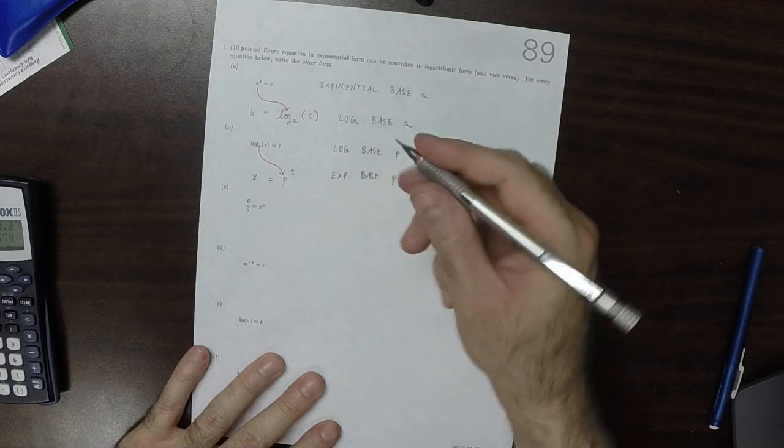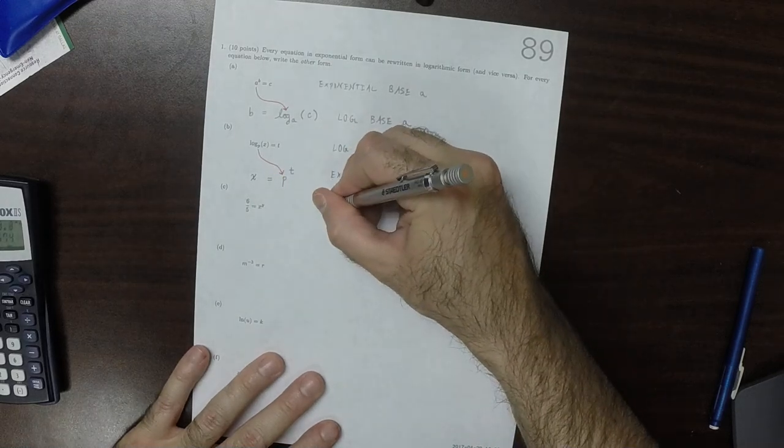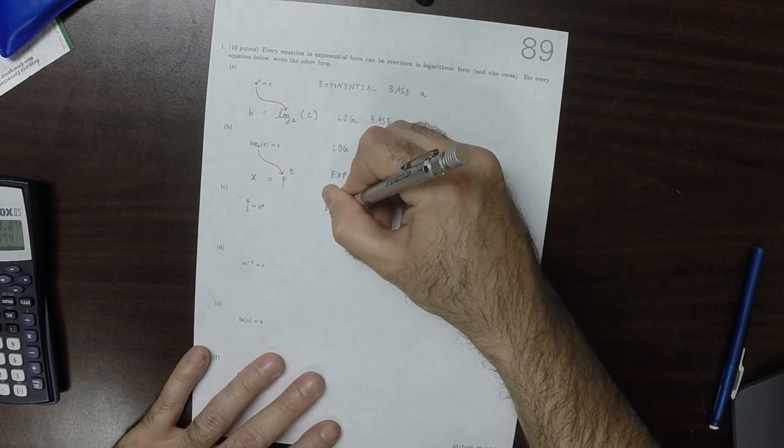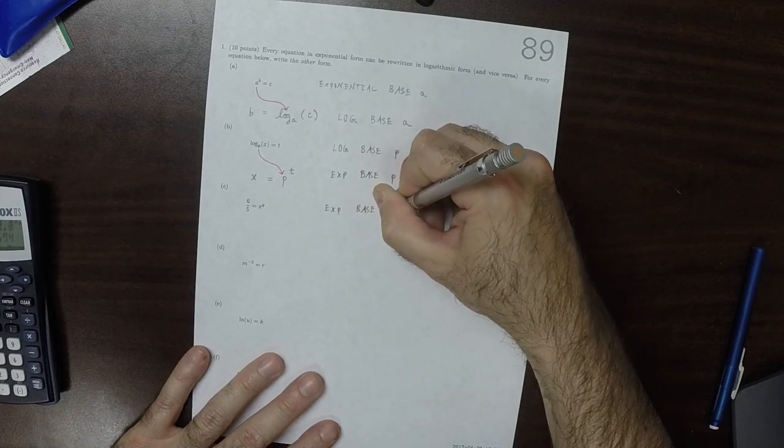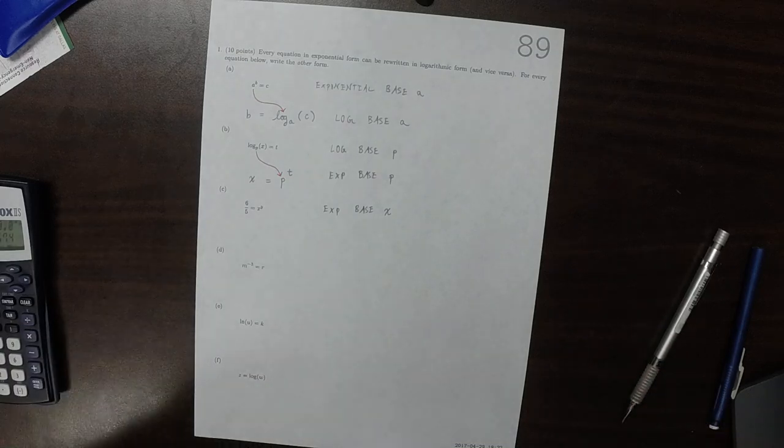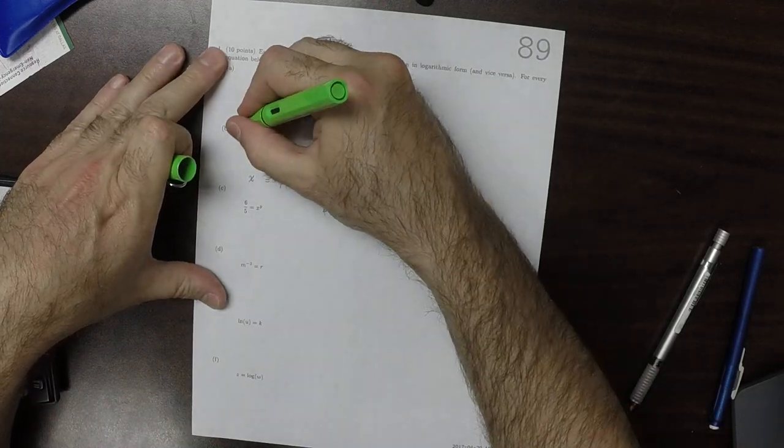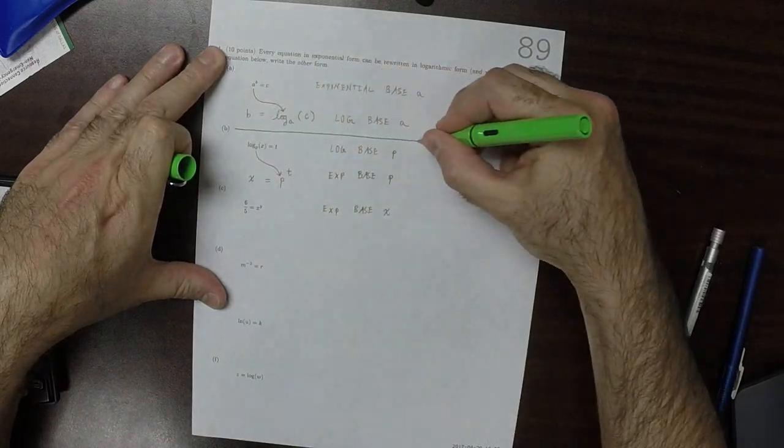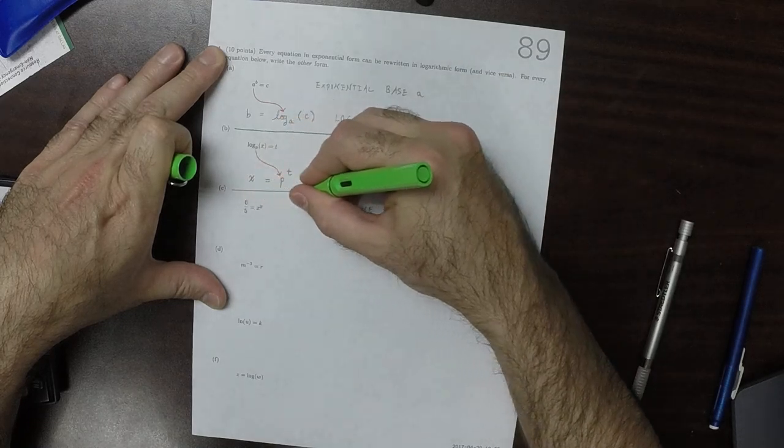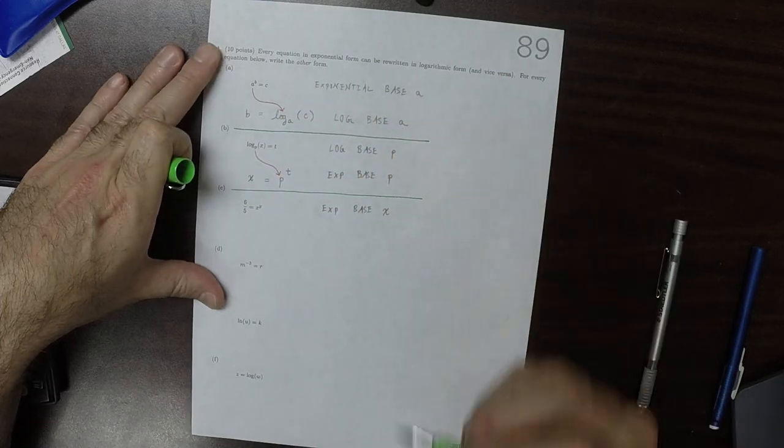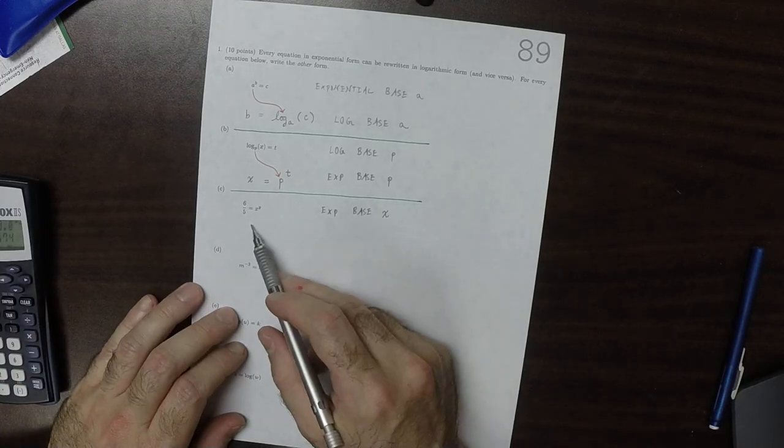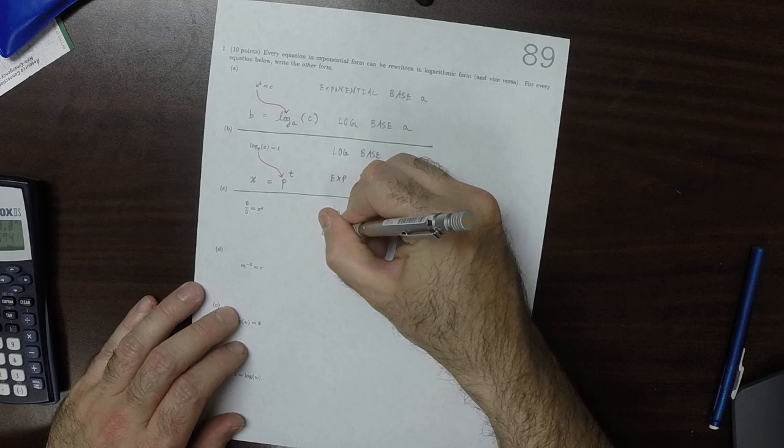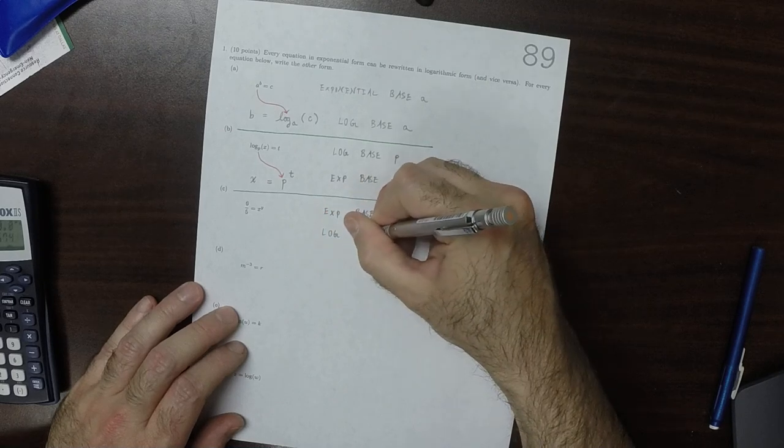Okay, so now this is in exponential base X. Let's separate these out. Make it real clear. So this is in exponential base X. So that means that we want to rewrite this in log base X.